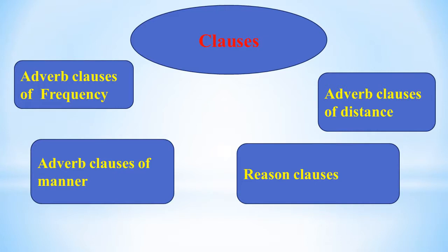Examples of result clauses: 'Joanna's cookie business is so successful that she hired three new employees last week.' 'New orders are coming so rapidly that she has expanded her production facilities.' Using 'such + noun + that': 'Joanna's cookies are such a success that she is considering franchising the business.' 'Running the business takes so much time now that Joanna no longer does the baking herself.' 'There were so many orders for her holiday cookies that her workers were baking 24 hours a day.'